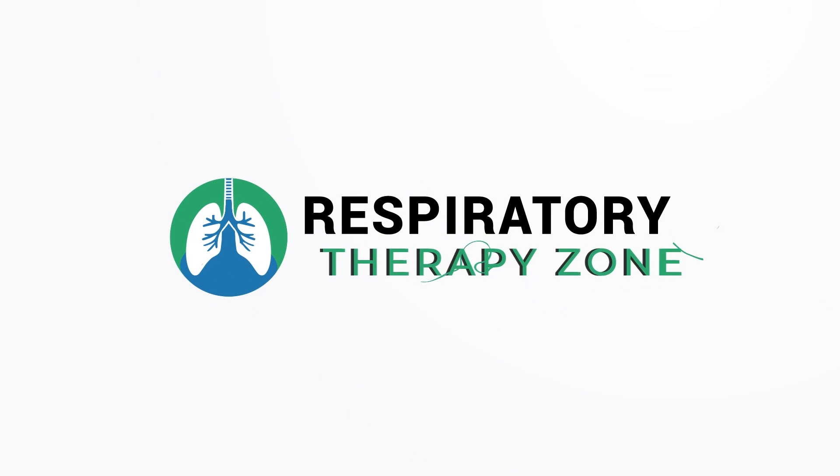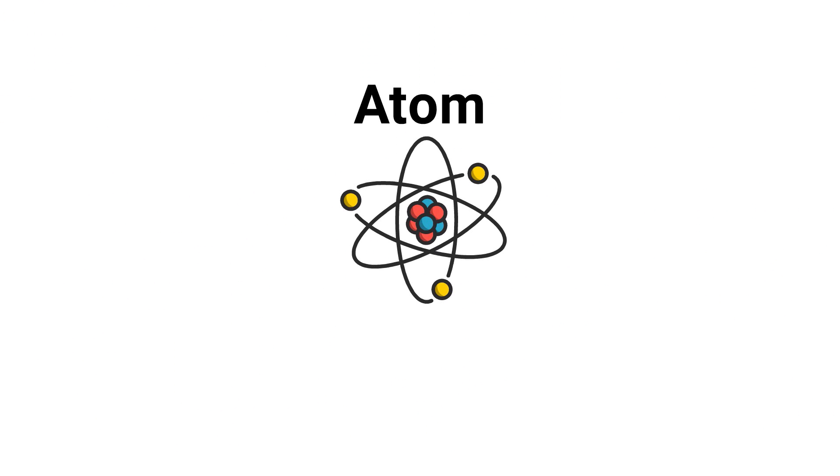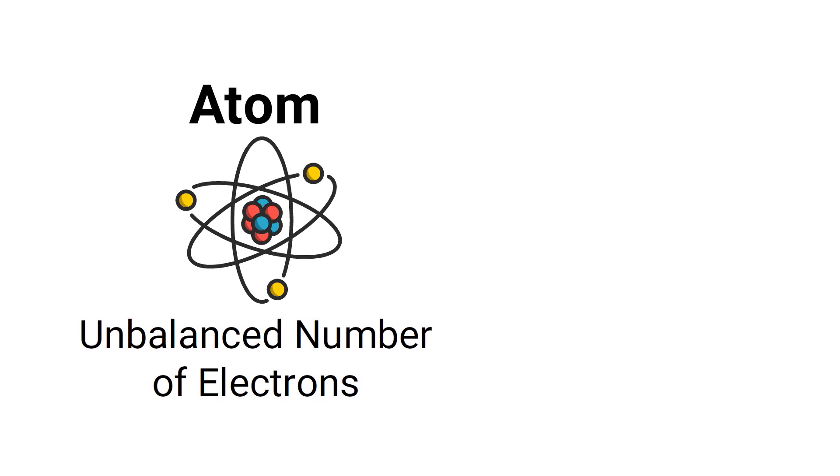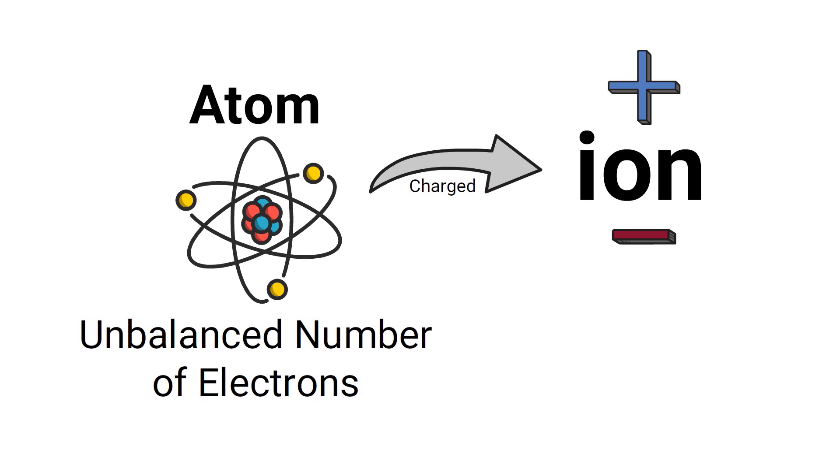If an atom has an unbalanced number of electrons it becomes charged and is known as an ion. Ions can have either a positive or negative charge.